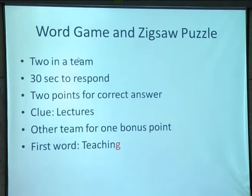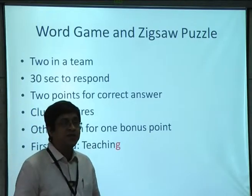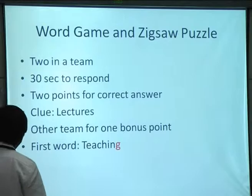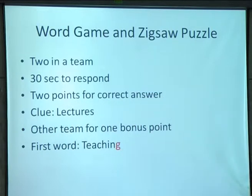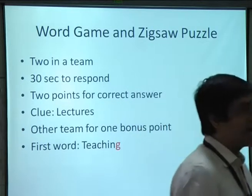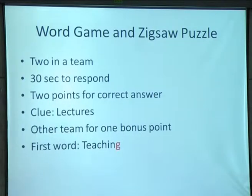The first game: rules are 30 seconds to respond — I started with one minute but things were getting boring. Two in a team, two points for the correct answer, and the clue is the lecture. Today's dumb shutters clue is this TLC seminar. The other team gets one bonus point if you cannot answer. The word game works like this: I start with 'teaching,' and the next person has to say a word beginning with the last letter — in this case 'g' — related to this seminar. If they say it in 30 seconds they get two points; otherwise the other team gets a chance for one point. 'Groups' — so 'groups,' then 'S' gives 'students.' That is the way it continues. It spends about 20 minutes in a classroom of about 30 students.